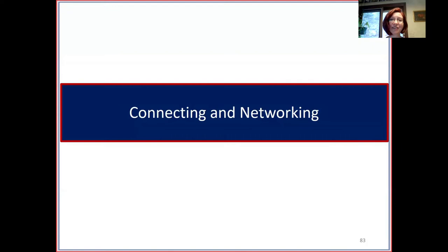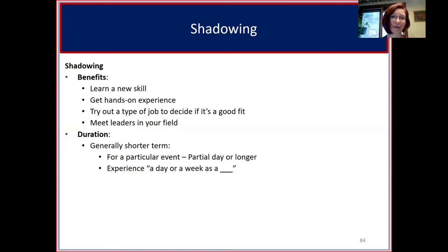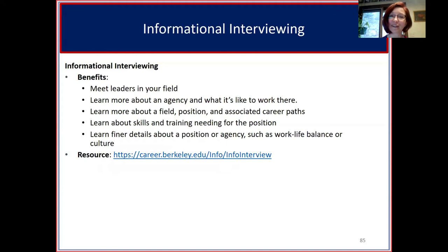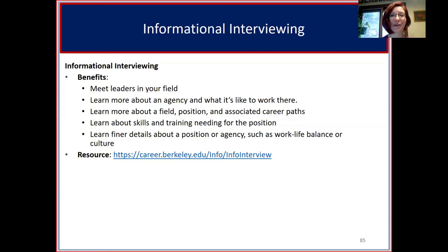Two great ways to connect and network are shadowing and informational interviewing. Shadowing involves simply emailing someone to say you'd like to shadow them — often to learn a new skill, get hands-on experience, try out a job, or meet leaders in your field. Informational interviewing involves emailing someone to ask questions about how they got where they are, learn more about their field, position, career paths, agency, work-life balance, or culture.